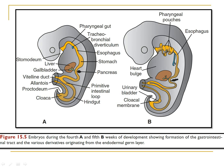We can see the gut tube here — part of it is protruded into the umbilical cord, communicating with the yolk sac through the vitelline duct. The hindgut communicates with a fine structure called the allantois, which projects into the umbilical cord. We can also see the formation of the tracheobronchial diverticulum, the developing liver, gallbladder, pancreas, and pharyngeal pouches from the pharyngeal gut. The cloaca is developing and will form the future urinary bladder.